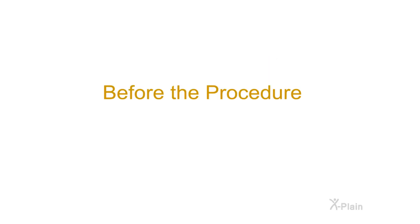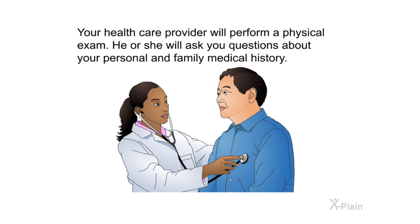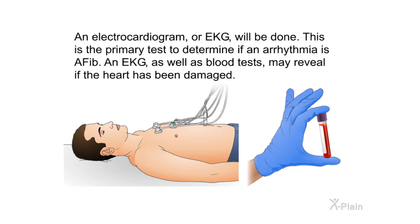Before the procedure. Your health care provider will perform a physical exam and ask you questions about your personal and family medical history. An electrocardiogram, or EKG, will be done — this is the primary test to determine if an arrhythmia is AFib. An EKG as well as blood tests may also reveal if the heart has been damaged.